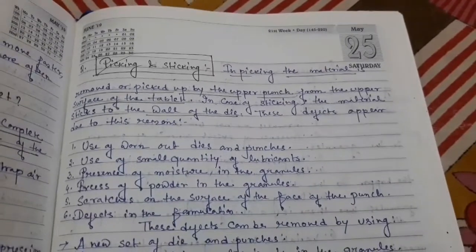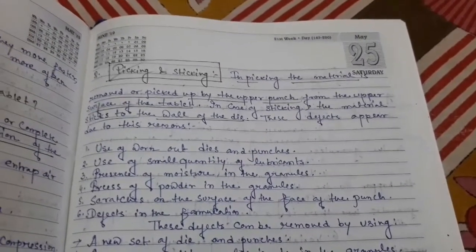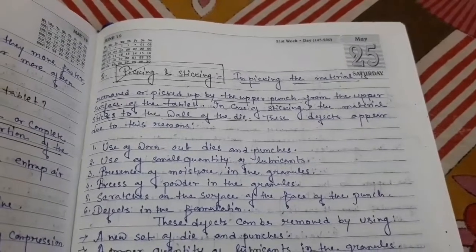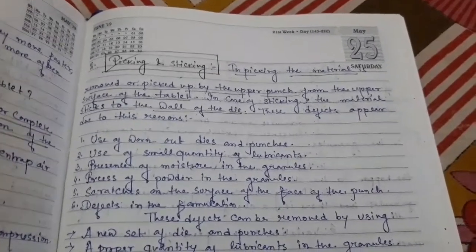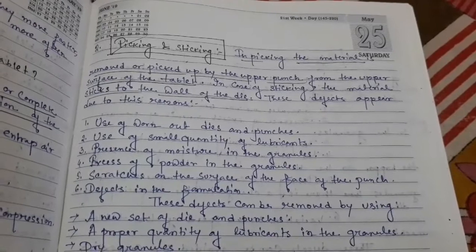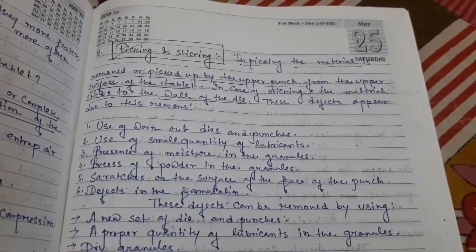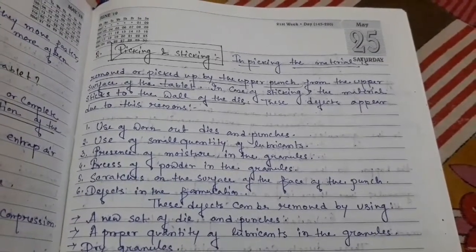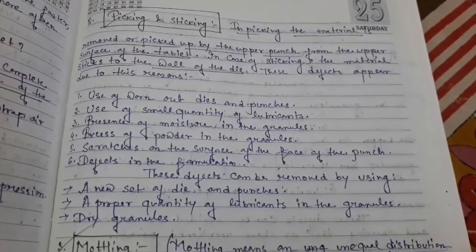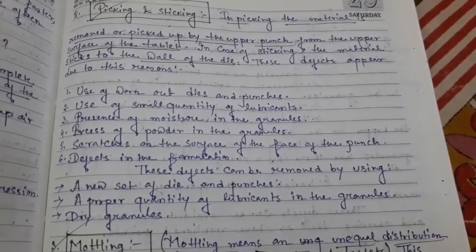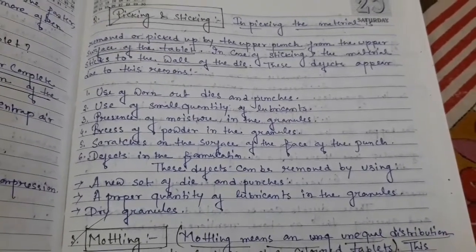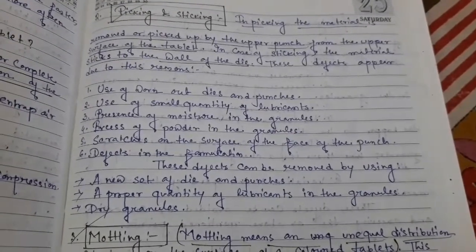Next: picking and sticking. Picking means material is removed or picked up by the upper punch from the surface of the tablet. It is caused by the use of worn-out dies and punches, use of a small quantity of water, presence of moisture in the granules, and excess powder in the granules.